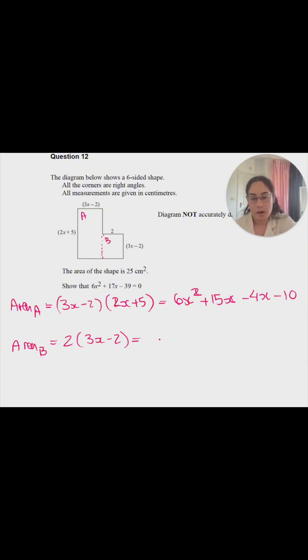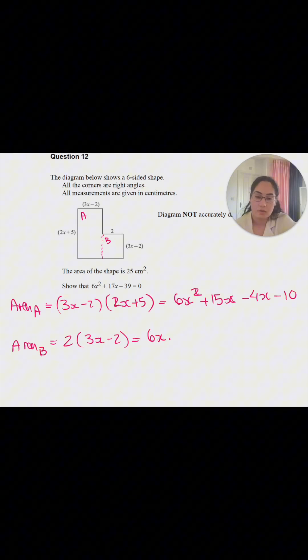For Area B, 2 times 3x gives us 6x, and 2 times -2 gives us -4.